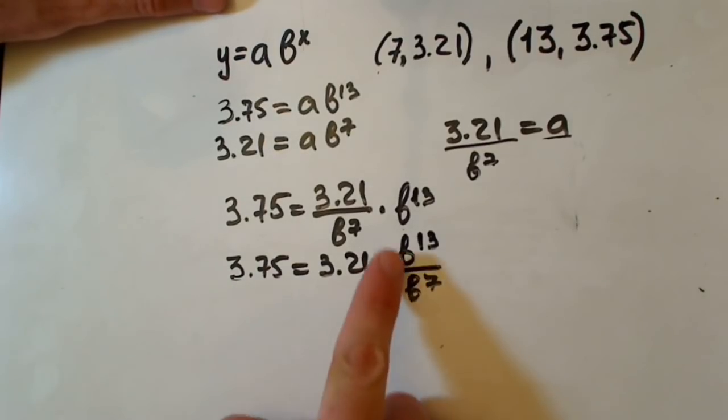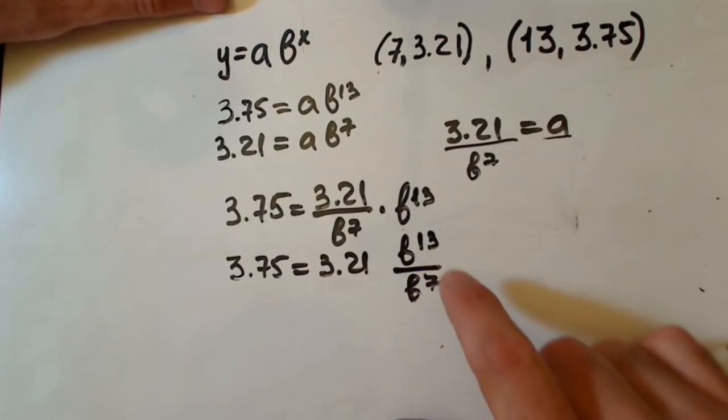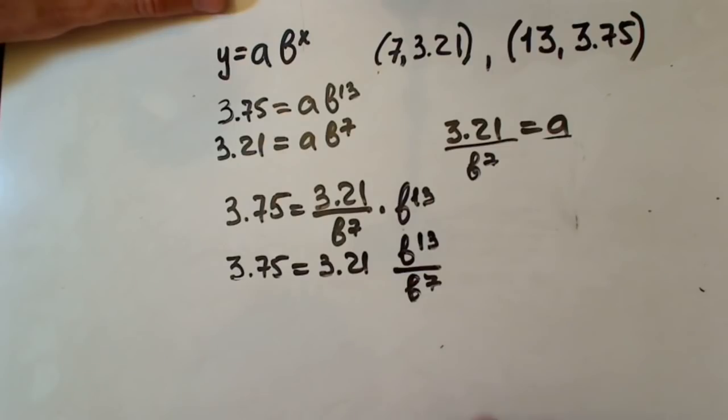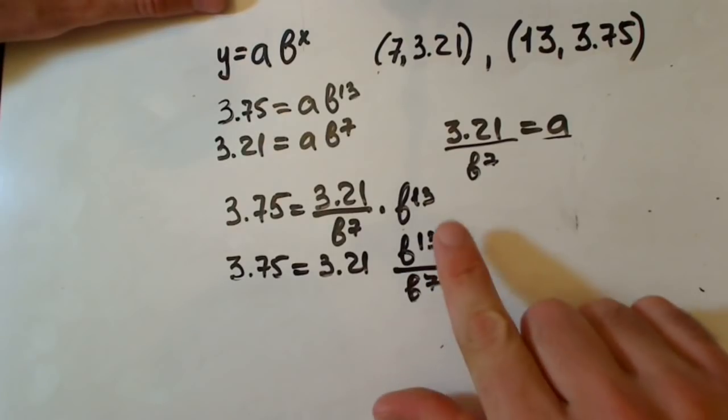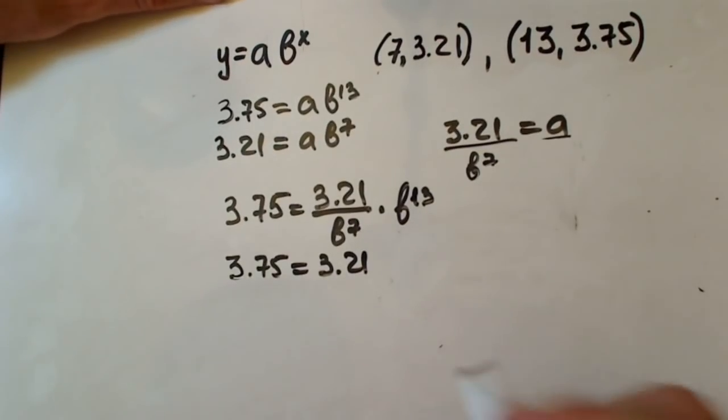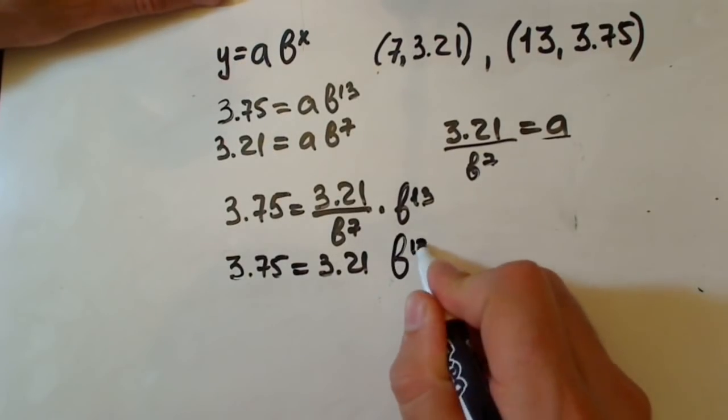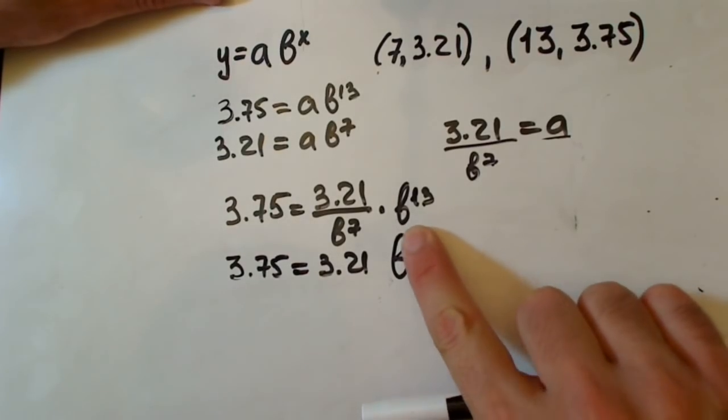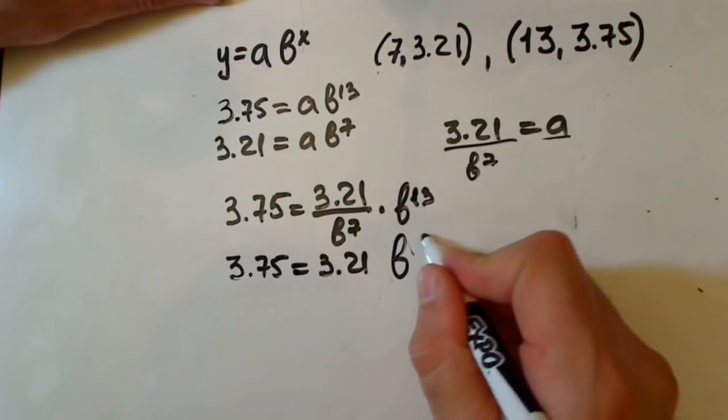When we have the same base of exponents we can just add the exponents. We have b to the thirteenth minus seven, which is b to the sixth.